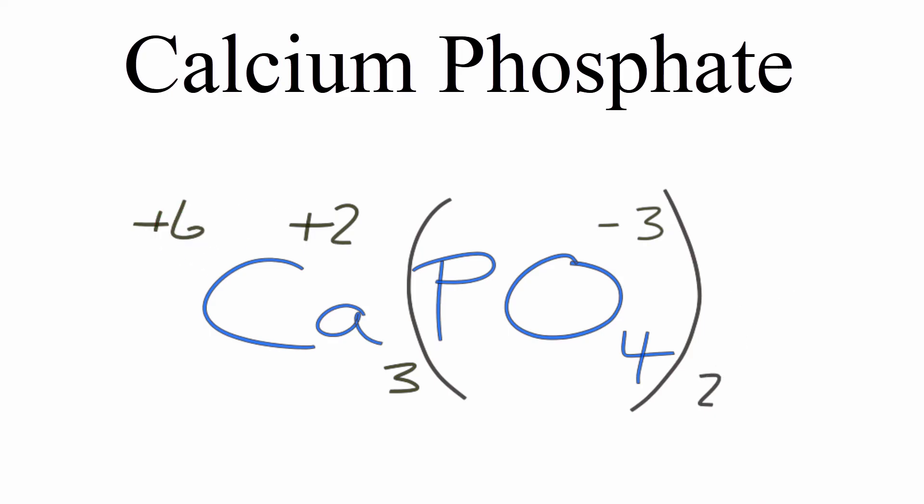And then over here, two times minus three, that gives me a minus six. Plus six and minus six, those will cancel out. So that tells me that I have the correct equation for calcium phosphate.